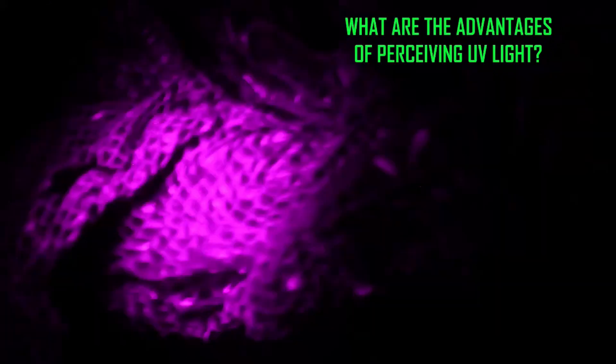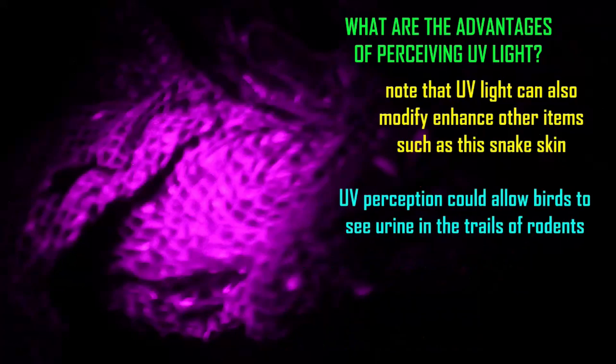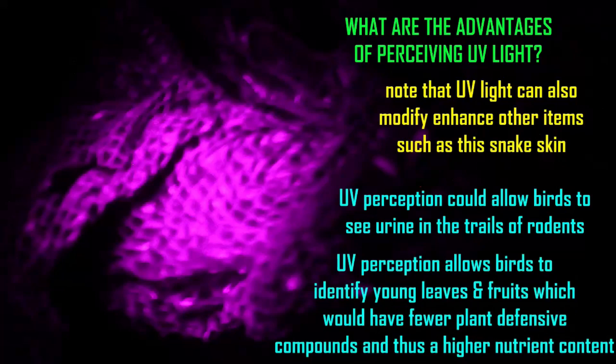The ability to perceive UV light doesn't only affect feathers. Notice how UV light bounces off snake skin, which otherwise appears as just a light tan — birds would perceive it differently. Birds can perceive urine in the trails of rodents that humans cannot see. UV light also allows the perception of young leaves and fruits, which have fewer defensive compounds and thus higher nutrient content. The ability to perceive UV has many potential benefits for birds.